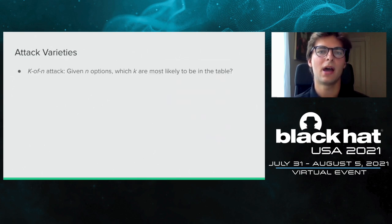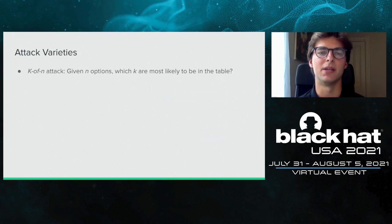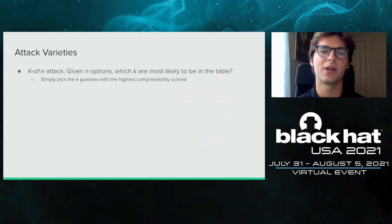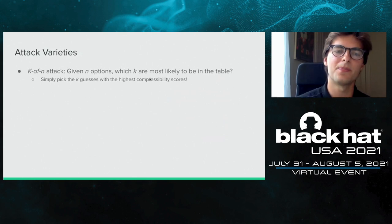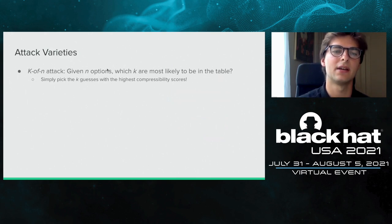This algorithm lends itself to two main attack varieties. The first is the K-of-N attack: given N options, which K are most likely to be in the table? Implementing this is straightforward — we run the algorithm on all N guesses and pick the K guesses with the highest compressibility scores. I'm going to pause and start a demo so you can see the K-of-N attack in action.